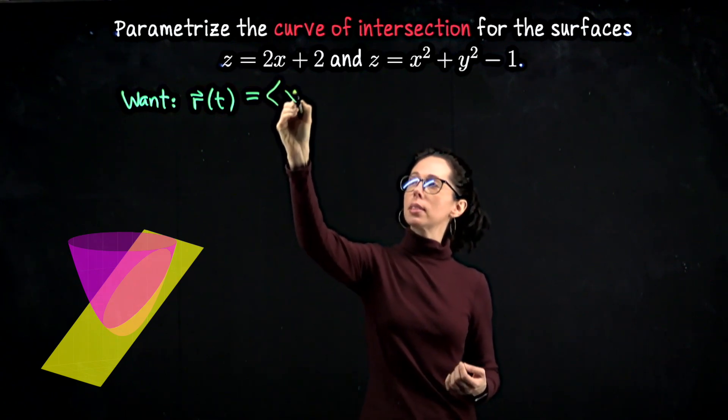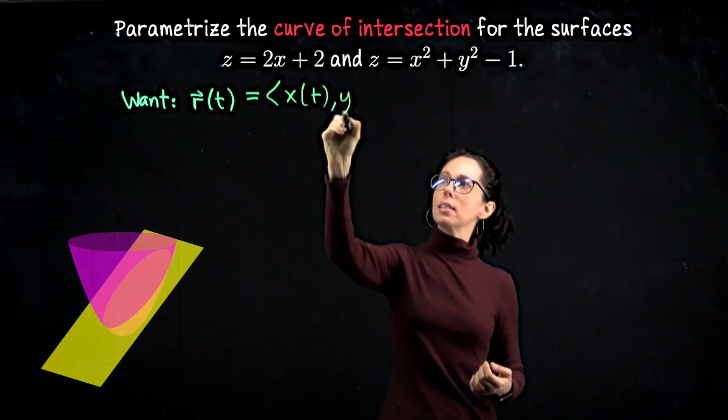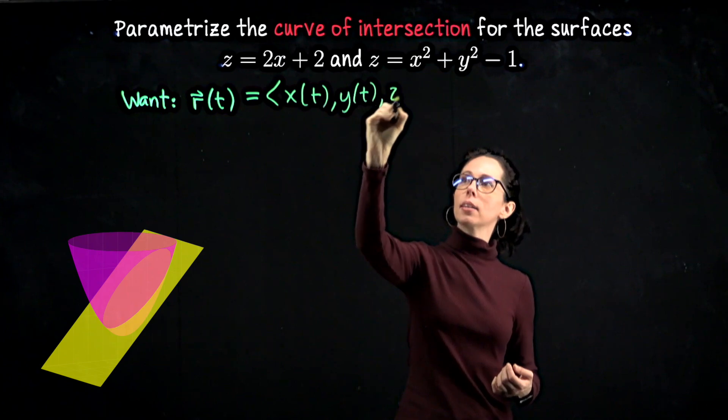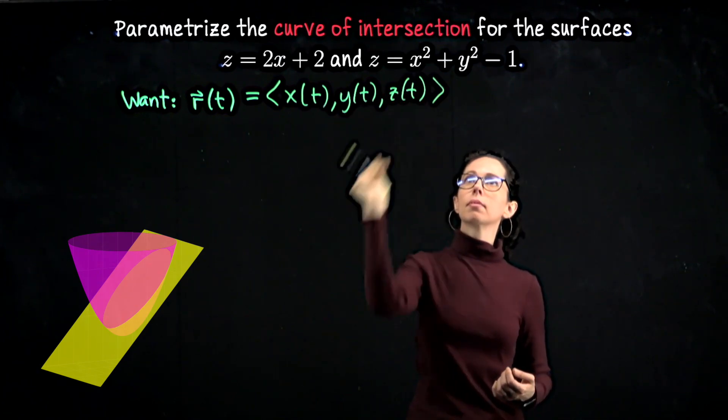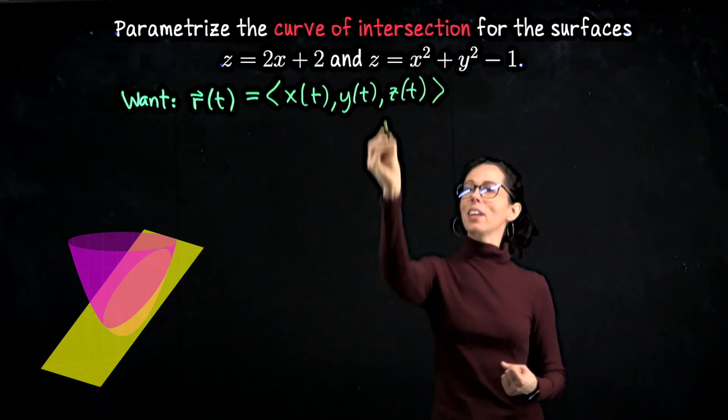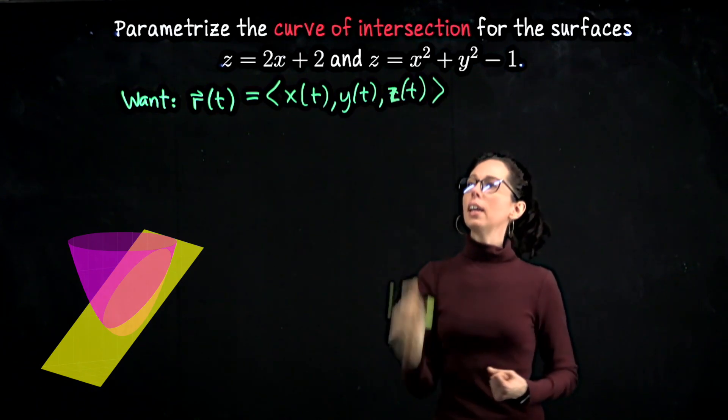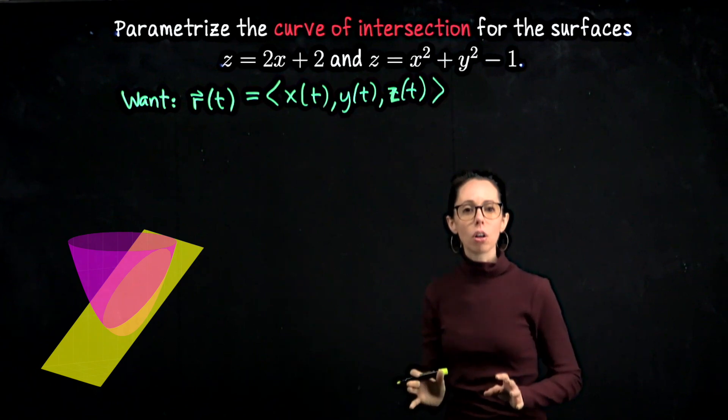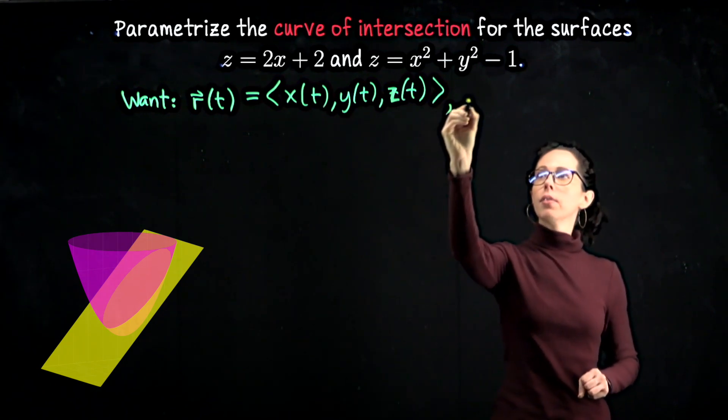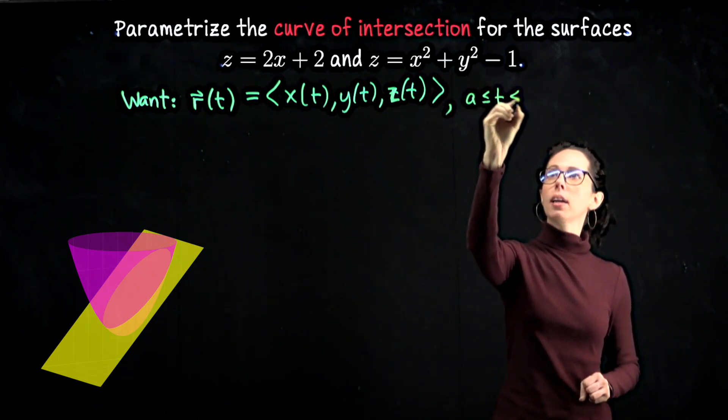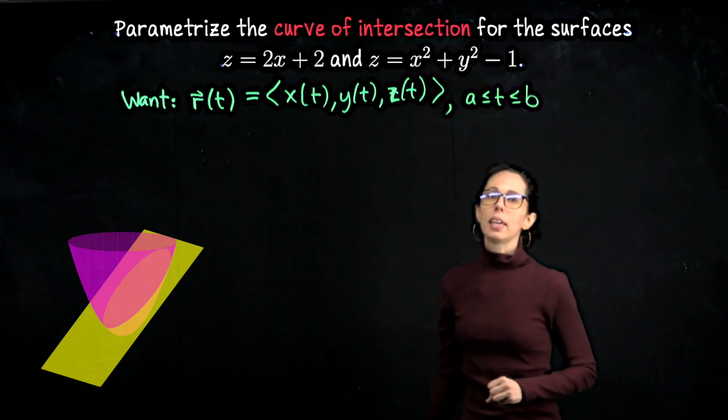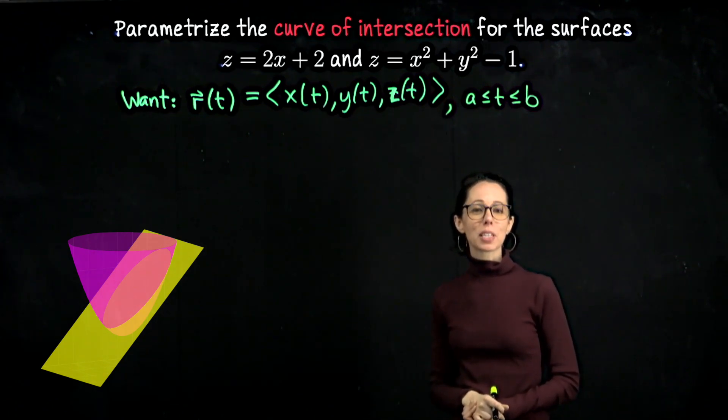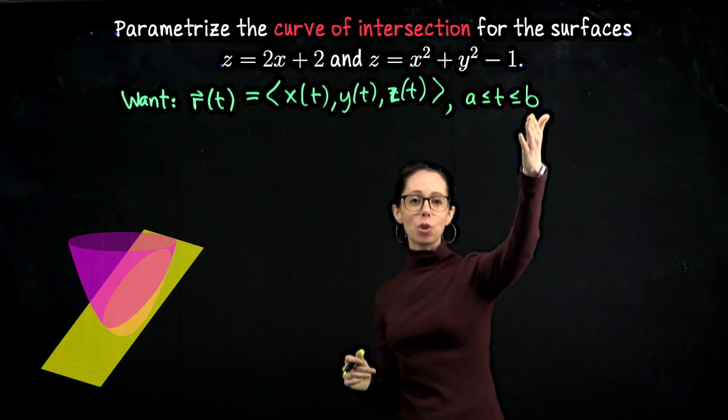So we need to be able to say what x, y, and z are in terms of t. So that's the goal, is to write down this parametric description where x, y, and z are all described in terms of t, for t going from some value a to some value b. Here, because this is a tilted circle, you can probably expect that this is going to be 0 and 2 pi.